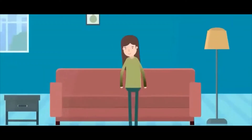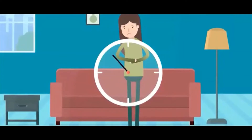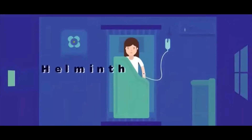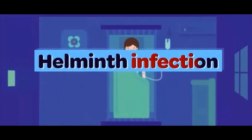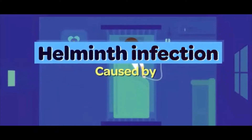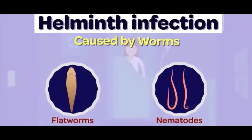A few days after returning from a party, Zara started complaining about a severe stomachache. The problem appeared minor initially, but with time it worsened. She was diagnosed late with a helminth infection. These are infections caused by the next category of animals in our list — worms. The worms responsible can be both flatworms and nematodes. We have already seen what flatworms, that is platyhelminthes, are. In this video, let's look at the second category: aschelminthes.